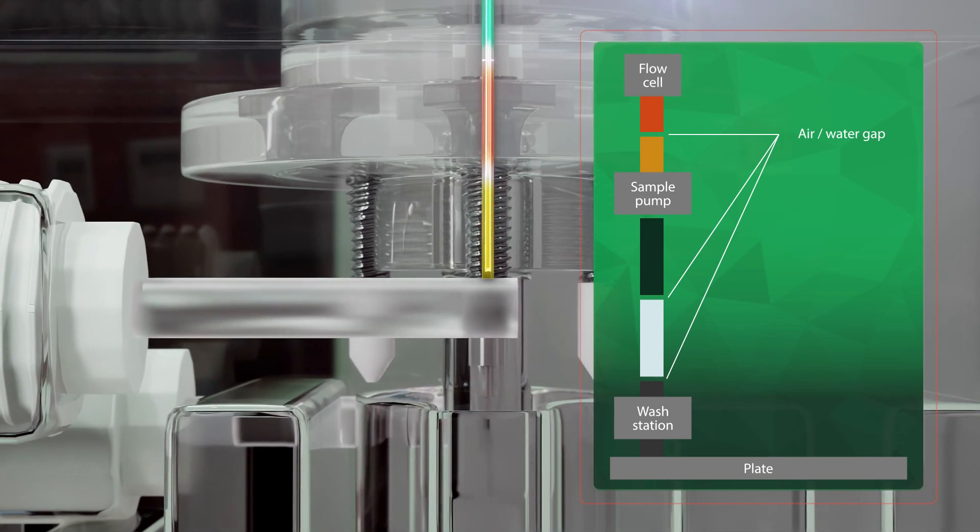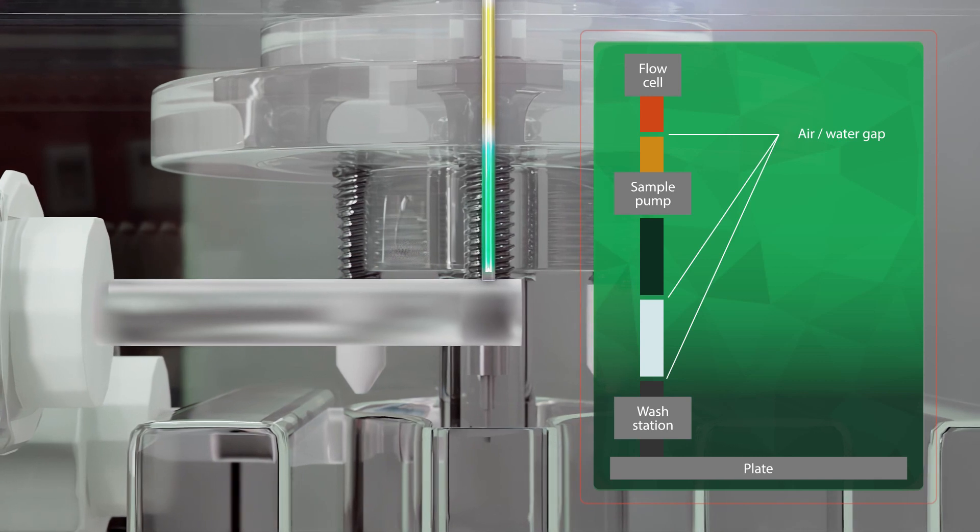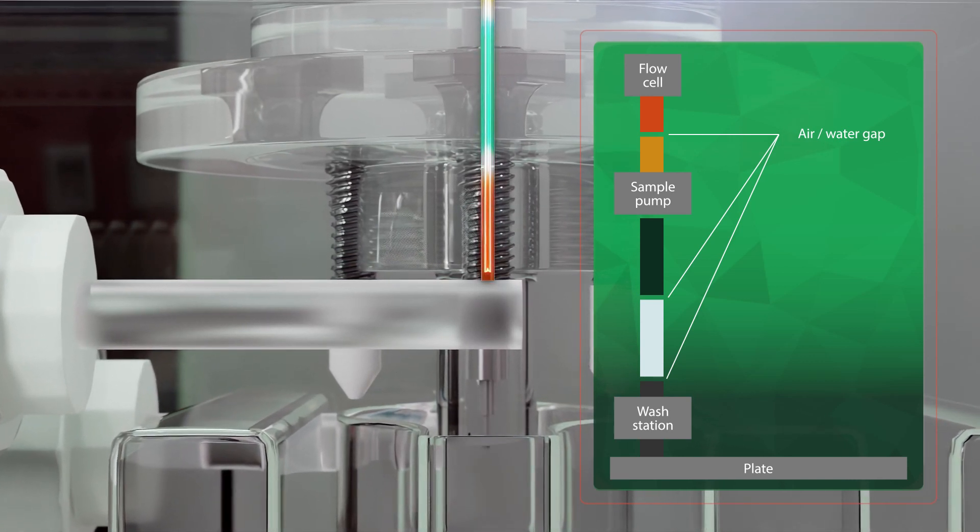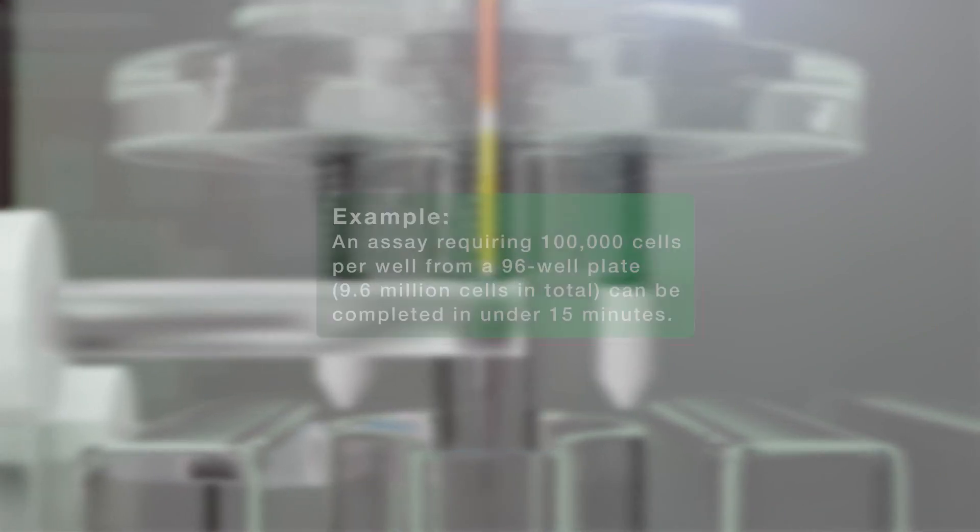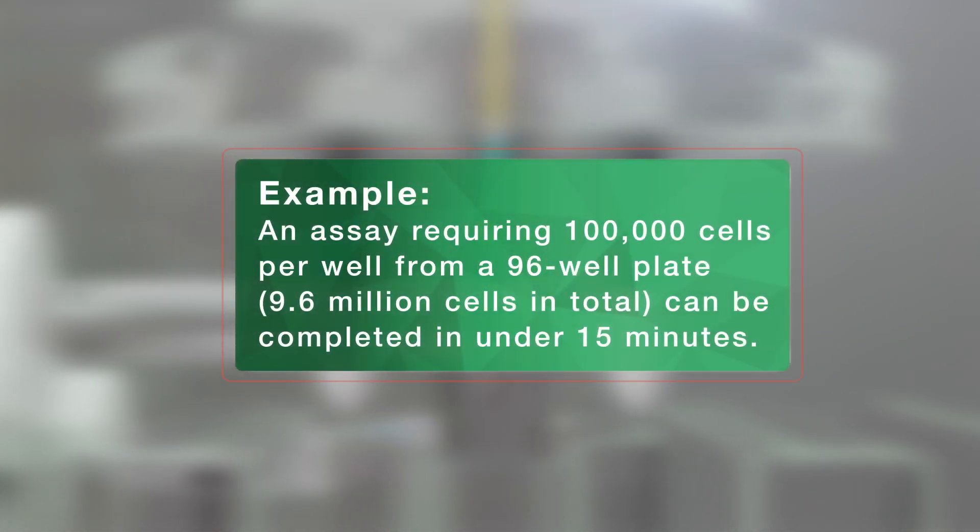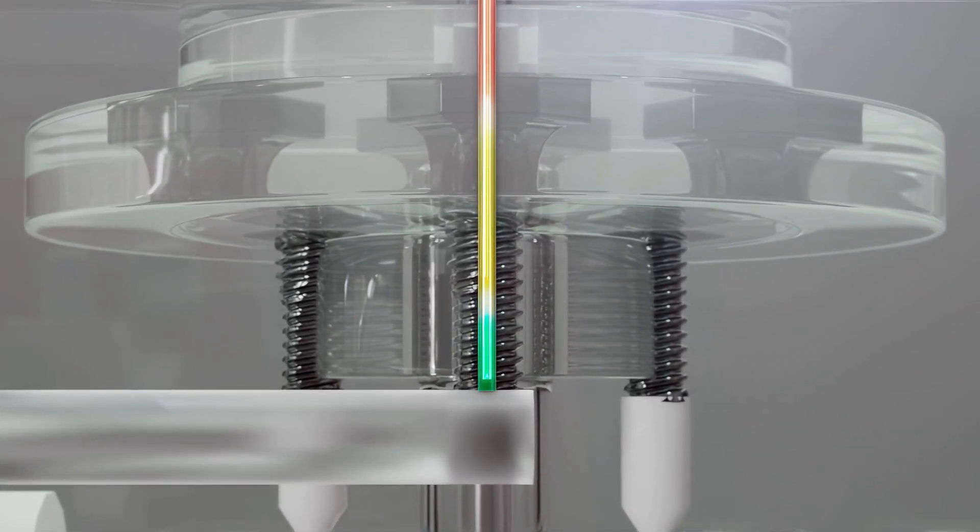To provide high sample processing speed and assay miniaturization, multiple samples are drawn into the line, separated with air and water gaps, making it possible to run small volume samples very quickly. The ability to rapidly collect data synergizes with fast plate sampling, making it possible to run complex assays at speed.